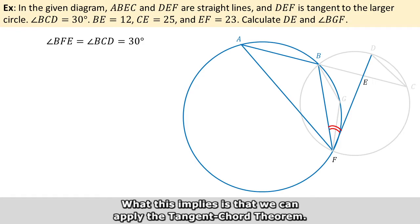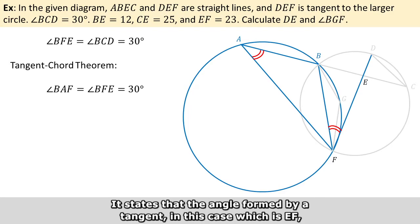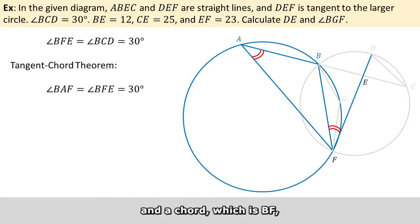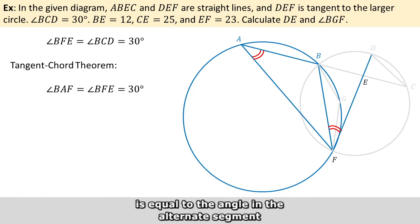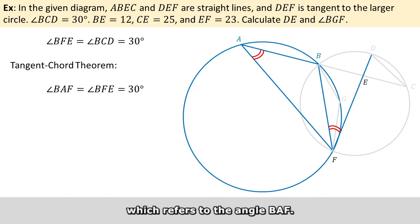What this implies is that we can apply the tangent-chord theorem. It states that the angle formed by a tangent, in this case which is EF, and the chord, which is BF, is equal to the angle in the alternate segment, which refers to the angle BAF.